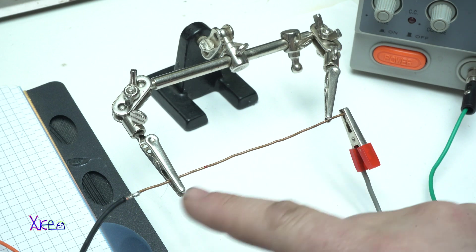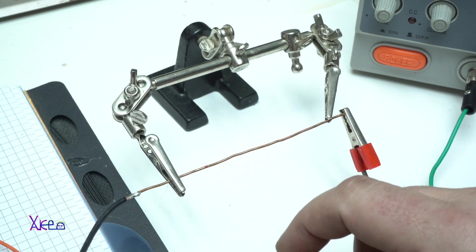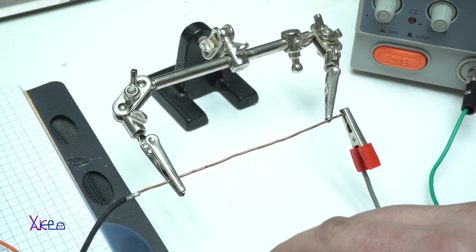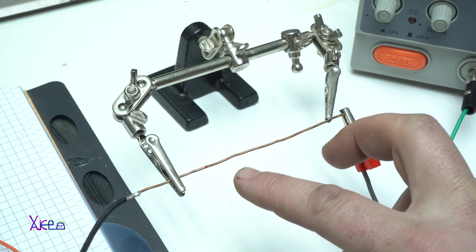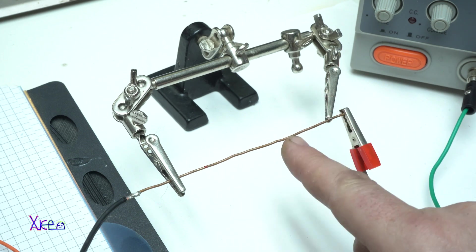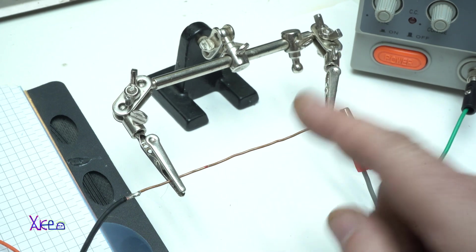Here I have a solid copper wire, diameter 1.5 millimeters or 16 gauge, and it's 7.5 centimeters long. This one is a shunt resistor.